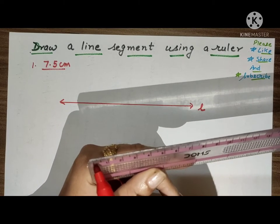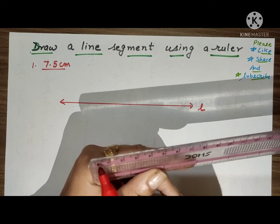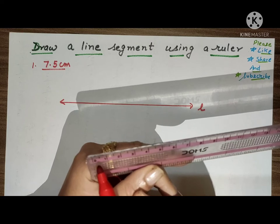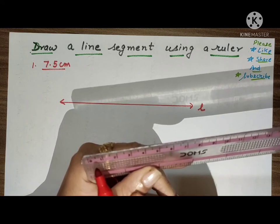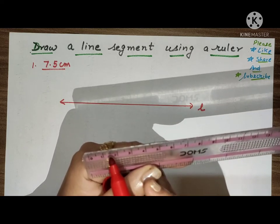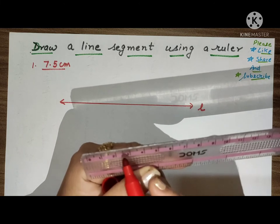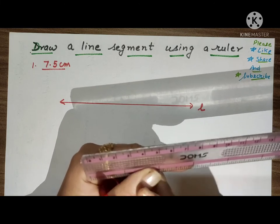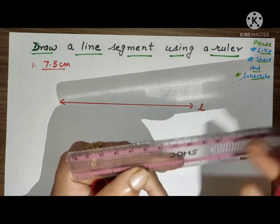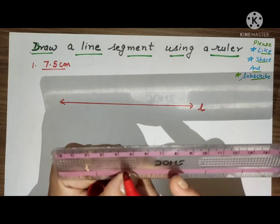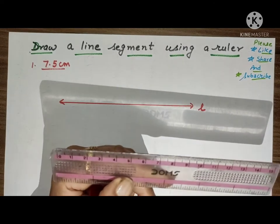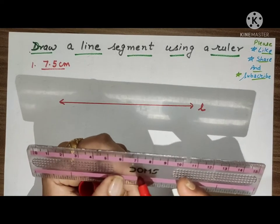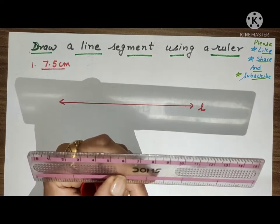So here is 0.5, the reading between one and two. Then we have 2.5 between two and three, 3.5, 4.5, 5.5 between five and six. If we have 7.5, then 7.5 will be here.